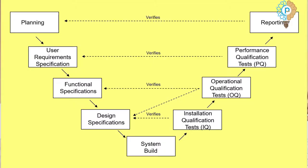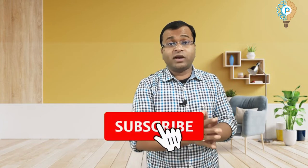Now, recapping the key points of the V-diagram: if you see the picture of the V-diagram, IQ confirms the Design Specification, OQ confirms the Functional Specification, PQ confirms the User Requirement Specification, and the Reporting confirms the Validation Plan. Now I think you understand about the V-diagram. If you have any doubts regarding computer system validation, you can comment and I will definitely reply.